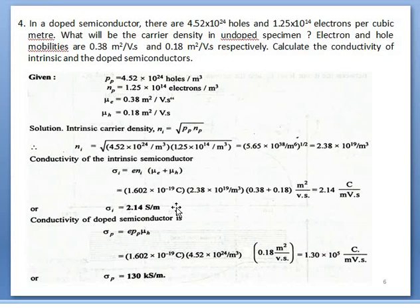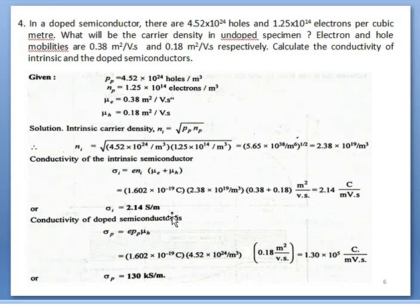For the doped p-type semiconductor, conductivity is expressed as e·Pp·μh, where Pp is hole concentration, μh is hole mobility, and e is electron charge. After substitution, the conductivity is 130×10³ S/m (kilo-siemens per meter). Initially conductivity was 2.14 S/m, but after doping it is 130×10³ S/m — an increase of about 10⁵ times. This shows the necessity of transforming intrinsic semiconductors into extrinsic semiconductors.